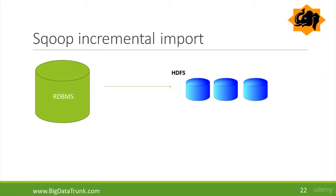Now let us talk about Sqoop Incremental Import. So far we have seen different ways in which we can import data into Hadoop as a one-time operation. There might be scenarios where you need to keep the imported data on Hadoop synchronized with the source table which is present in a relational database. It is not optimal to re-import every time data is changed or appended, so with Sqoop Incremental Import you can easily synchronize your data in Hadoop with the relational database side.